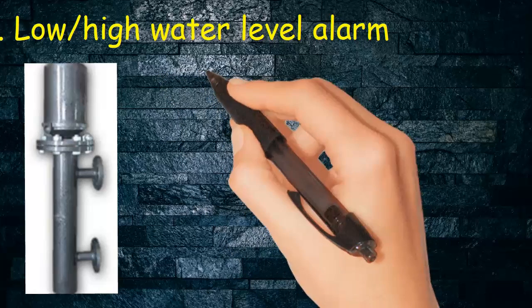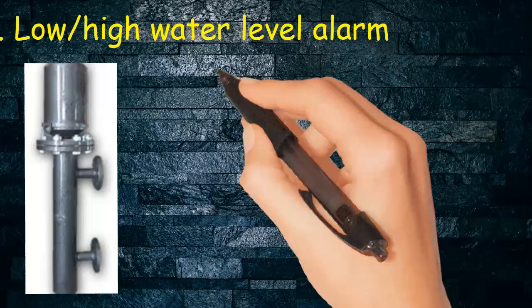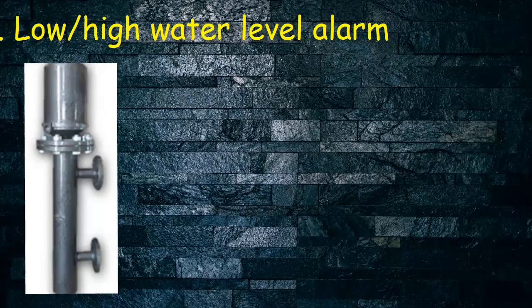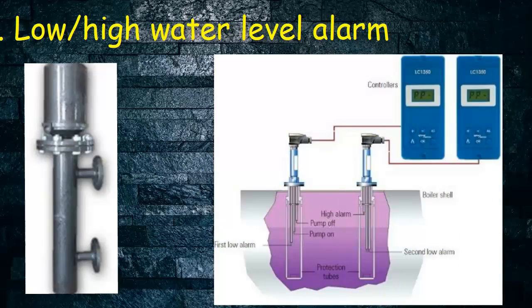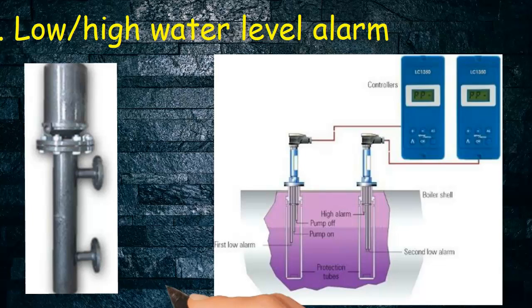Whereas low or no water level in the drum will lead to overheating of tubes and can lead to fire or meltdown of the complete boiler. The low high water level alarm provides an early warning to the operator for taking appropriate action to manage the water level inside the boiler water drum.